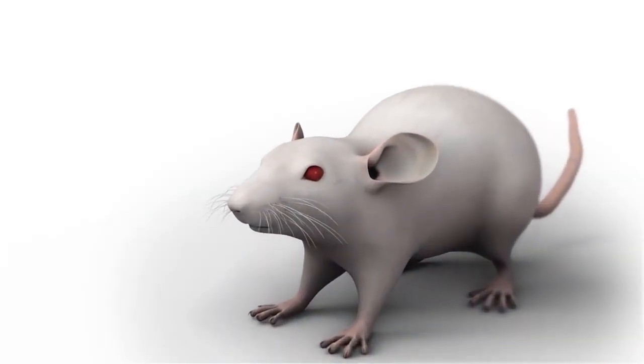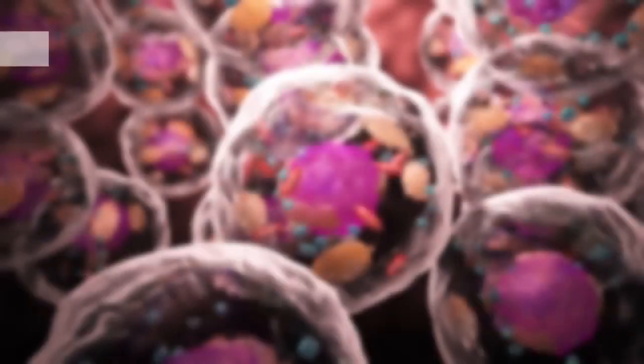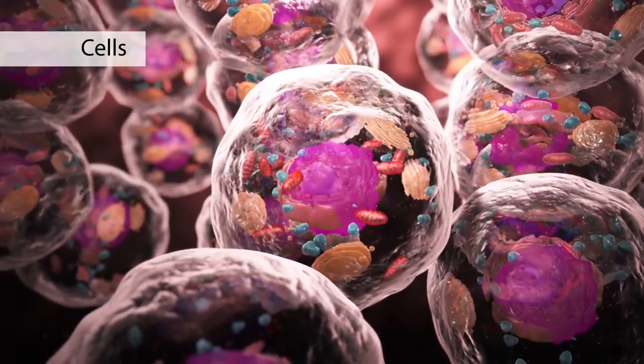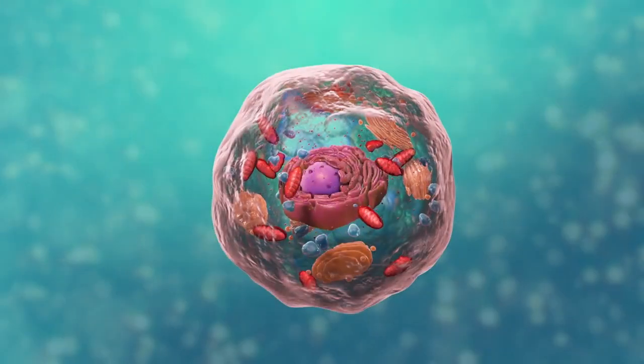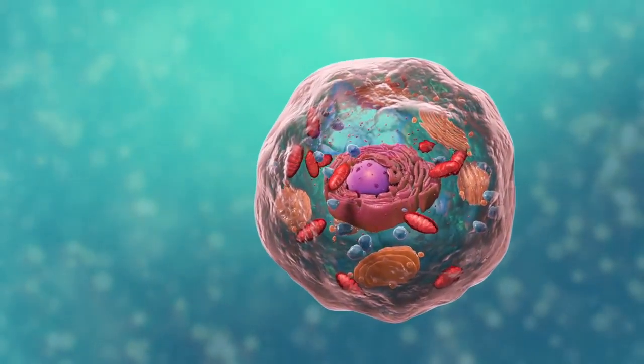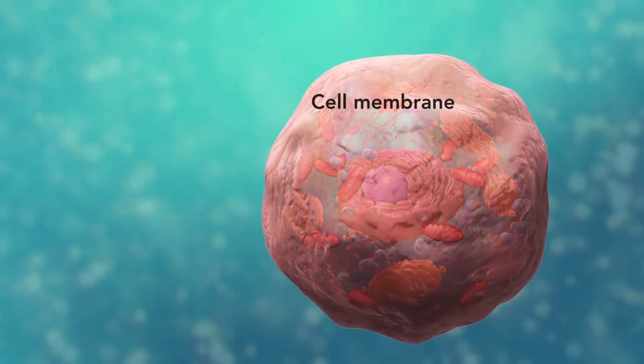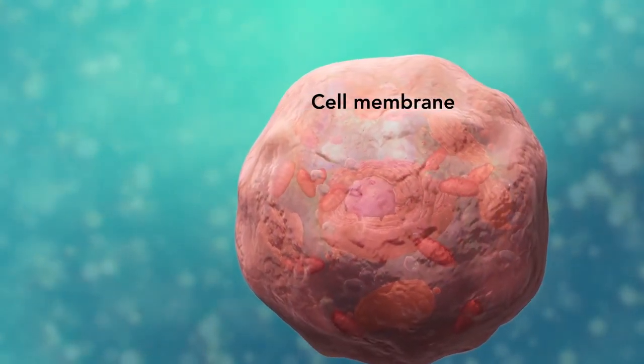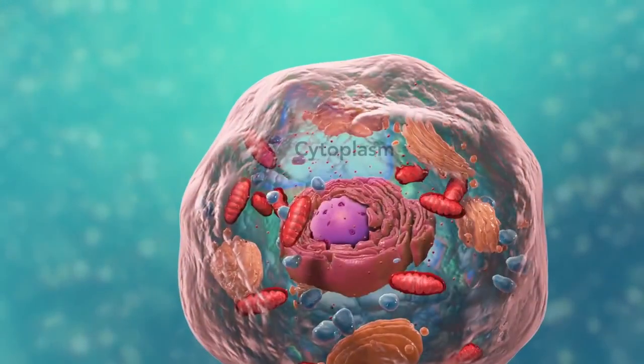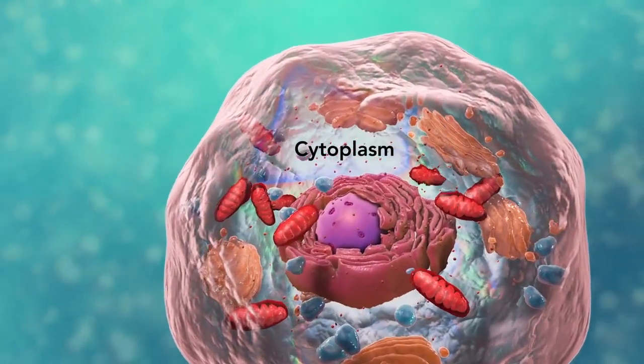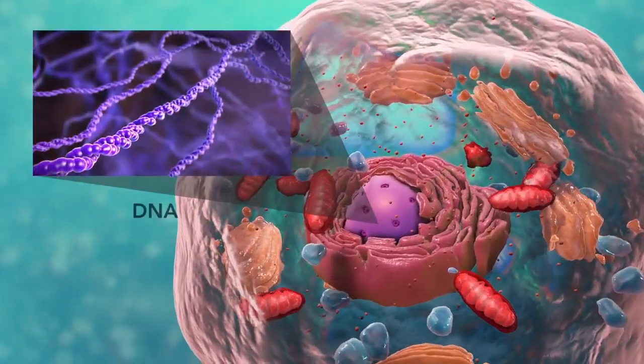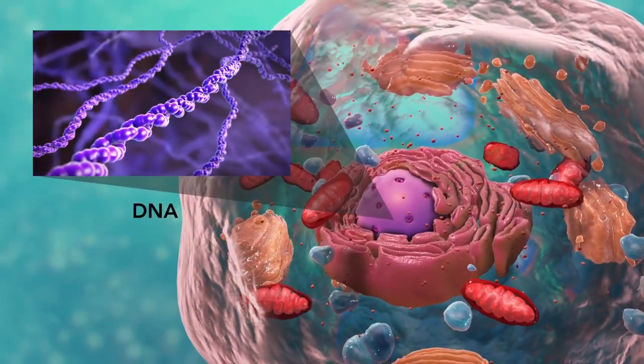Cells are the smallest living units of an organism. All cells have three things in common no matter what type of cell they are. All cells have a cell membrane which separates the inside of the cell from its environment, cytoplasm which is a jelly-like fluid, and DNA which is the cell's genetic material.